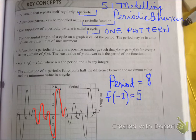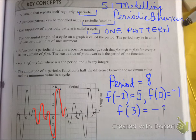And I want you to find, and you're given these values: f at negative two is five, f at zero is negative one, f at three is negative two. So this is an example.